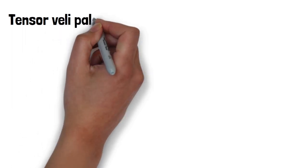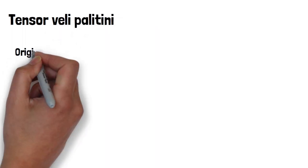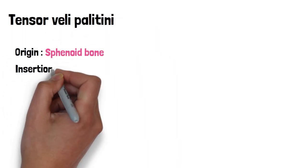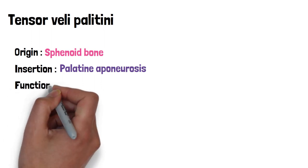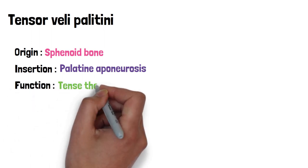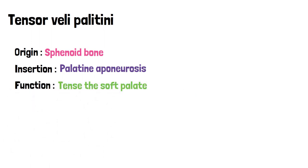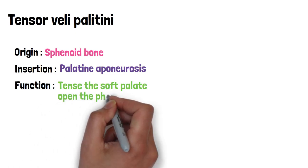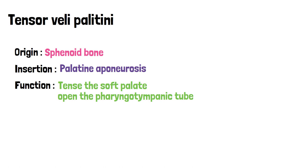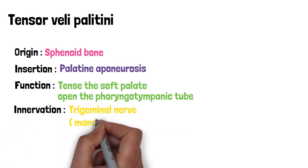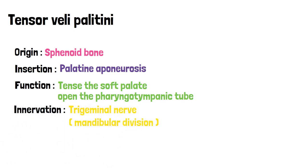The tensor veli palatini originates from the sphenoid bone and is inserted into the palatine aponeurosis. Its function is to tense the soft palate so that other muscles can work more effectively. Its second function is to open the pharyngotympanic tube when the palate opens during yawning or swallowing.